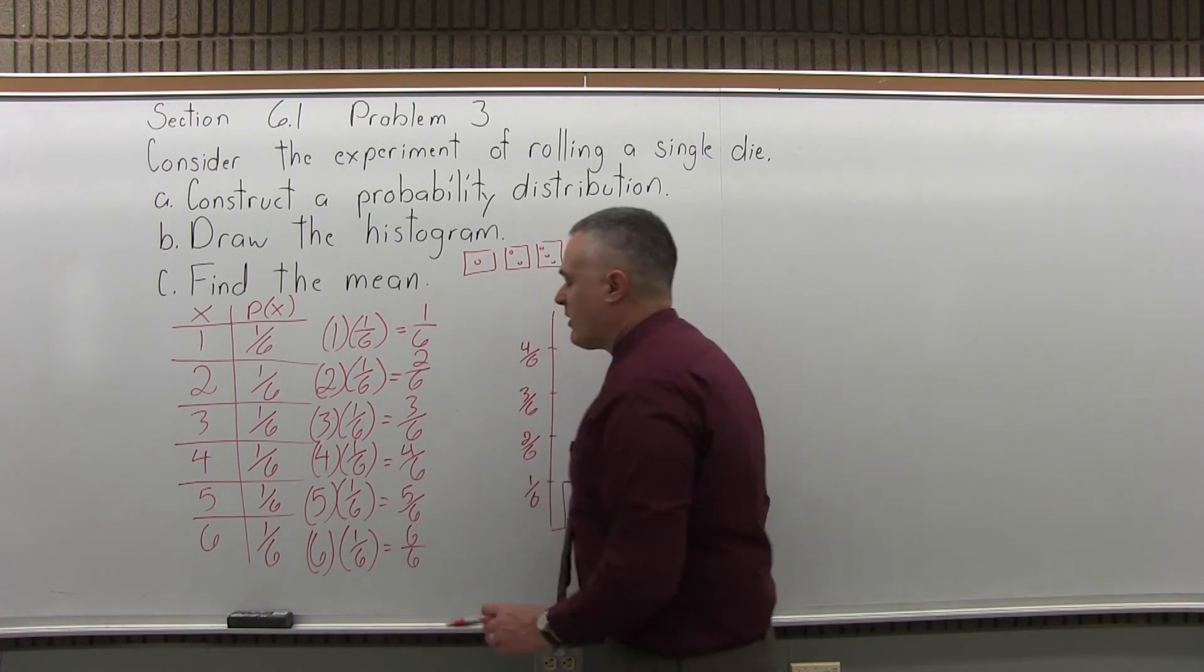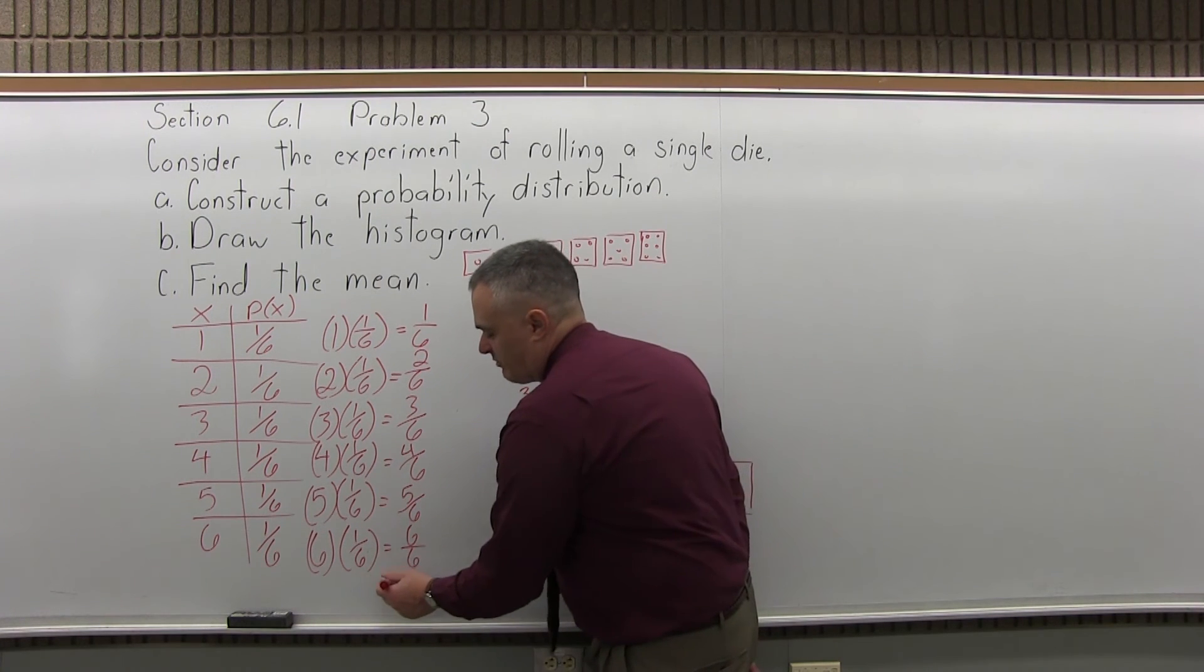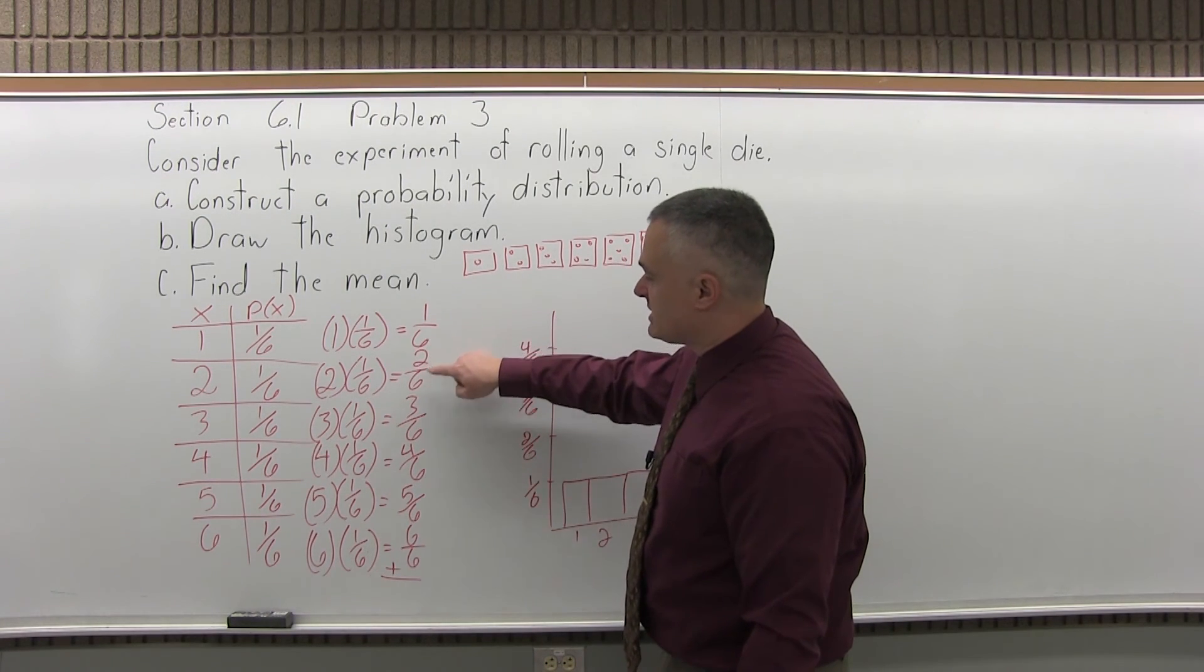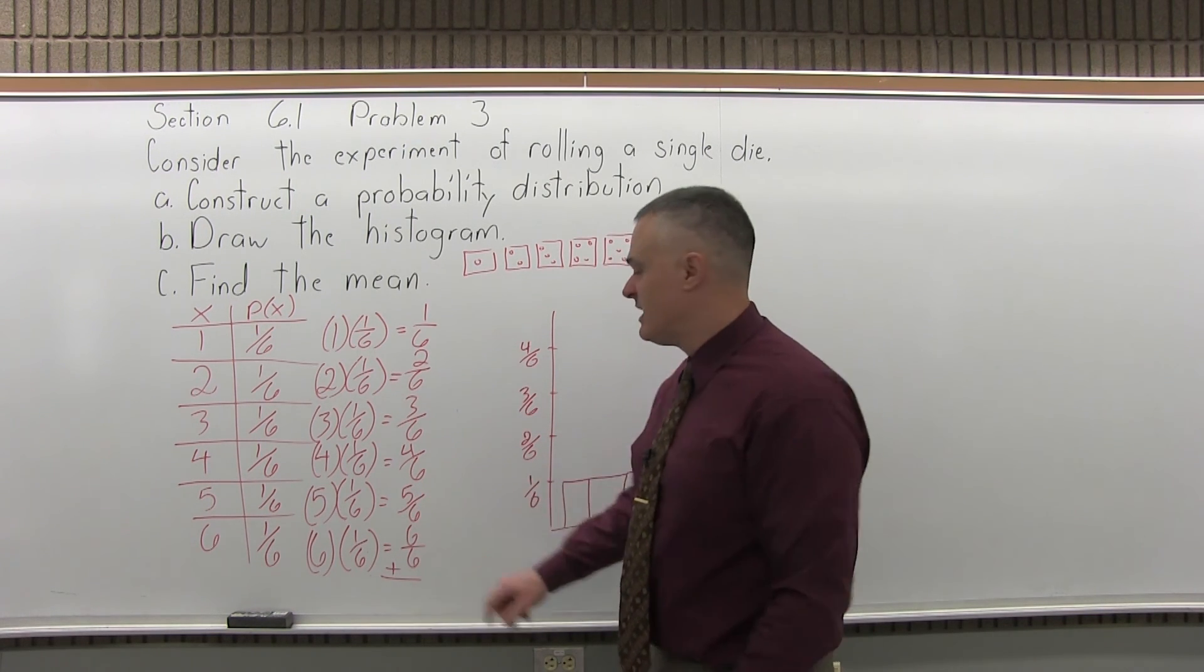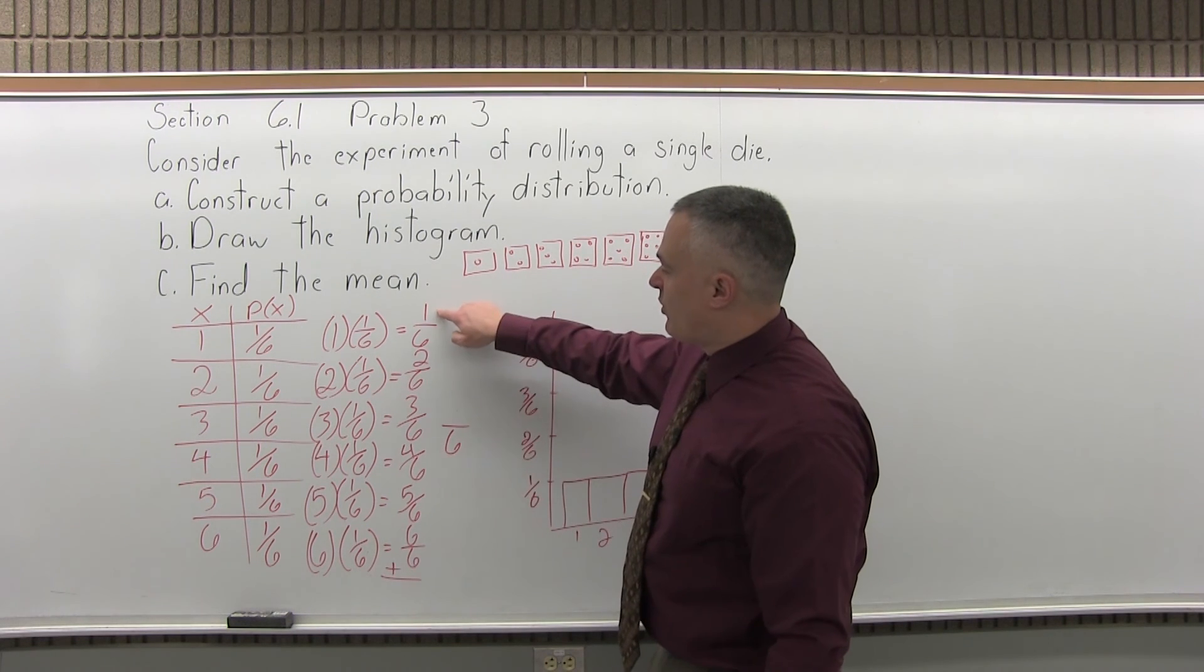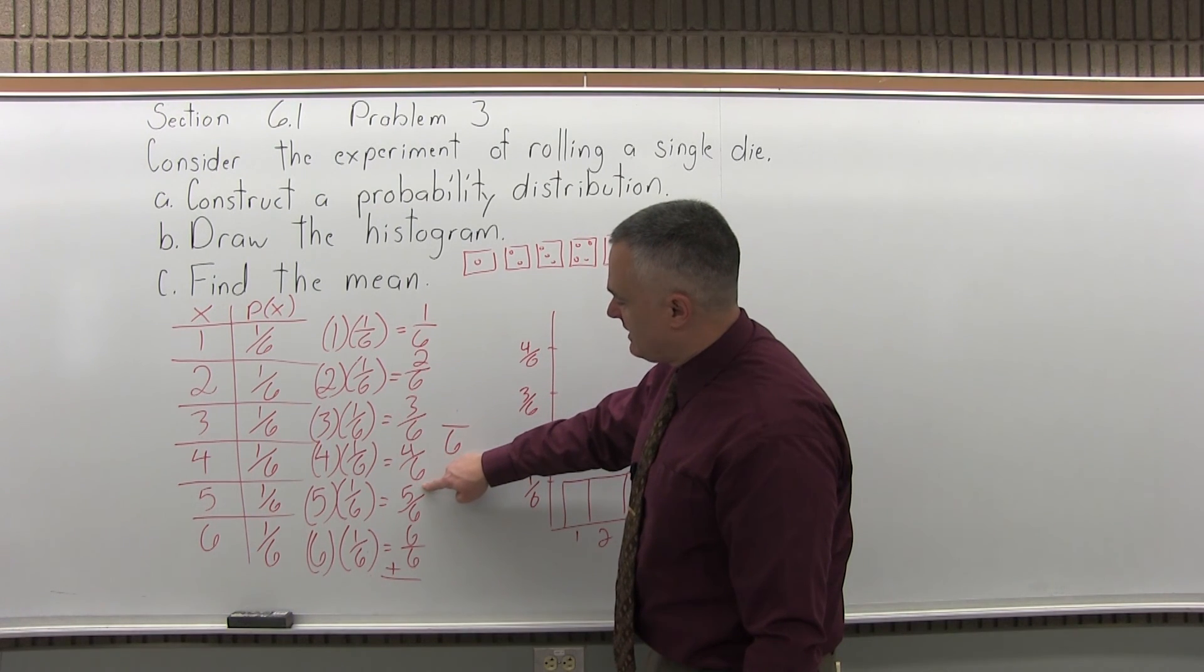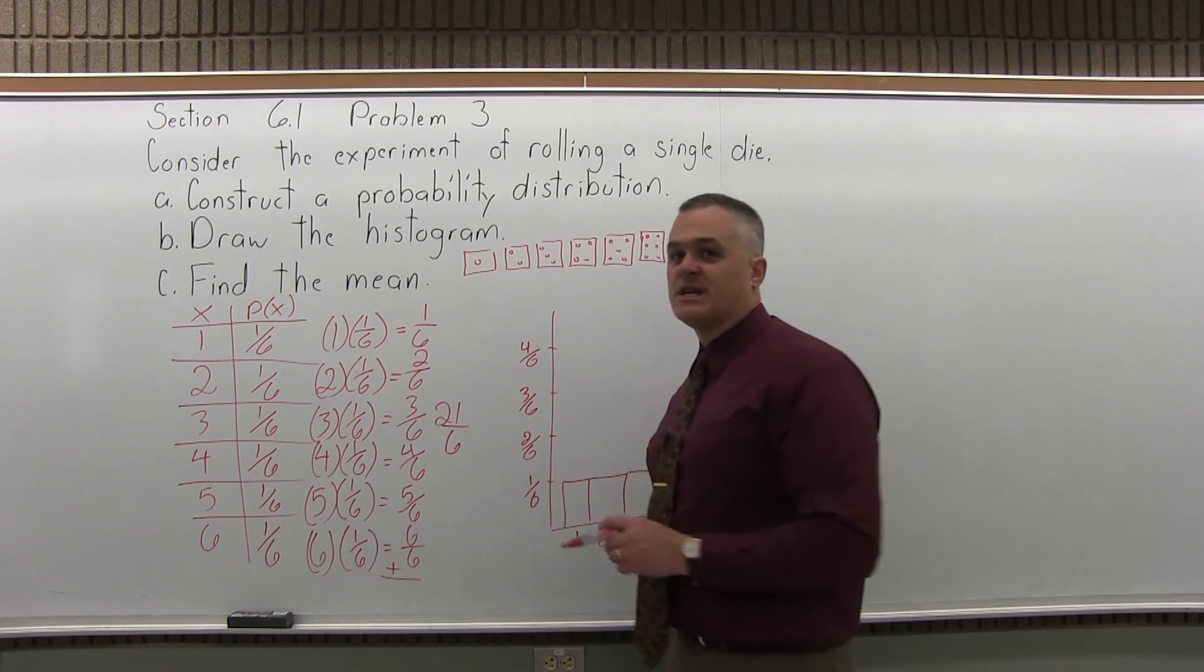I want to leave everything with the same denominator, because now to finish my mean of a probability distribution, what I have to do is add these together. So, 1 over 6 plus 2 over 6 plus 3 over 6 plus 4 over 6 plus 5 over 6 plus 6 over 6. My common denominator is 6. If I add the numerators, 1 and 2 is 3, 3 and 3 is 6, 6 and 4 is 10, 10 and 5 is 15, 15 and 6 is 21.